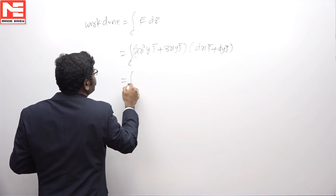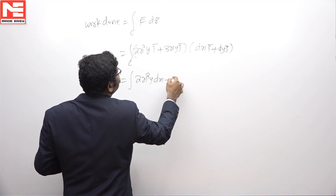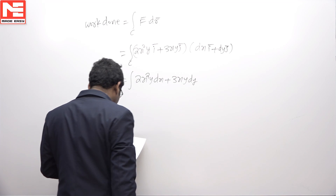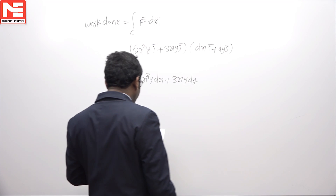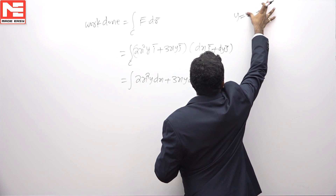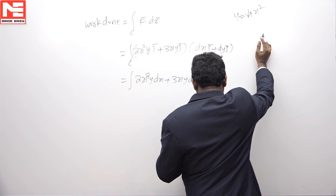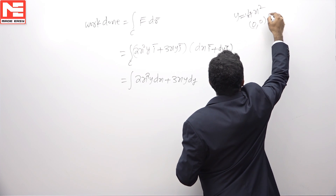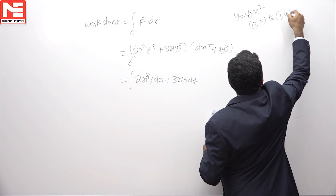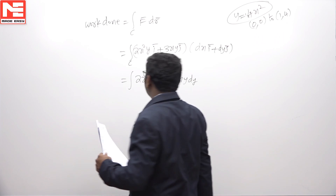So the integral becomes: integral over C of 2x²y dx + 3xy dy, where C is the path y = 4x², from (0,0) to (1,4). We substitute y = 4x² along the path.